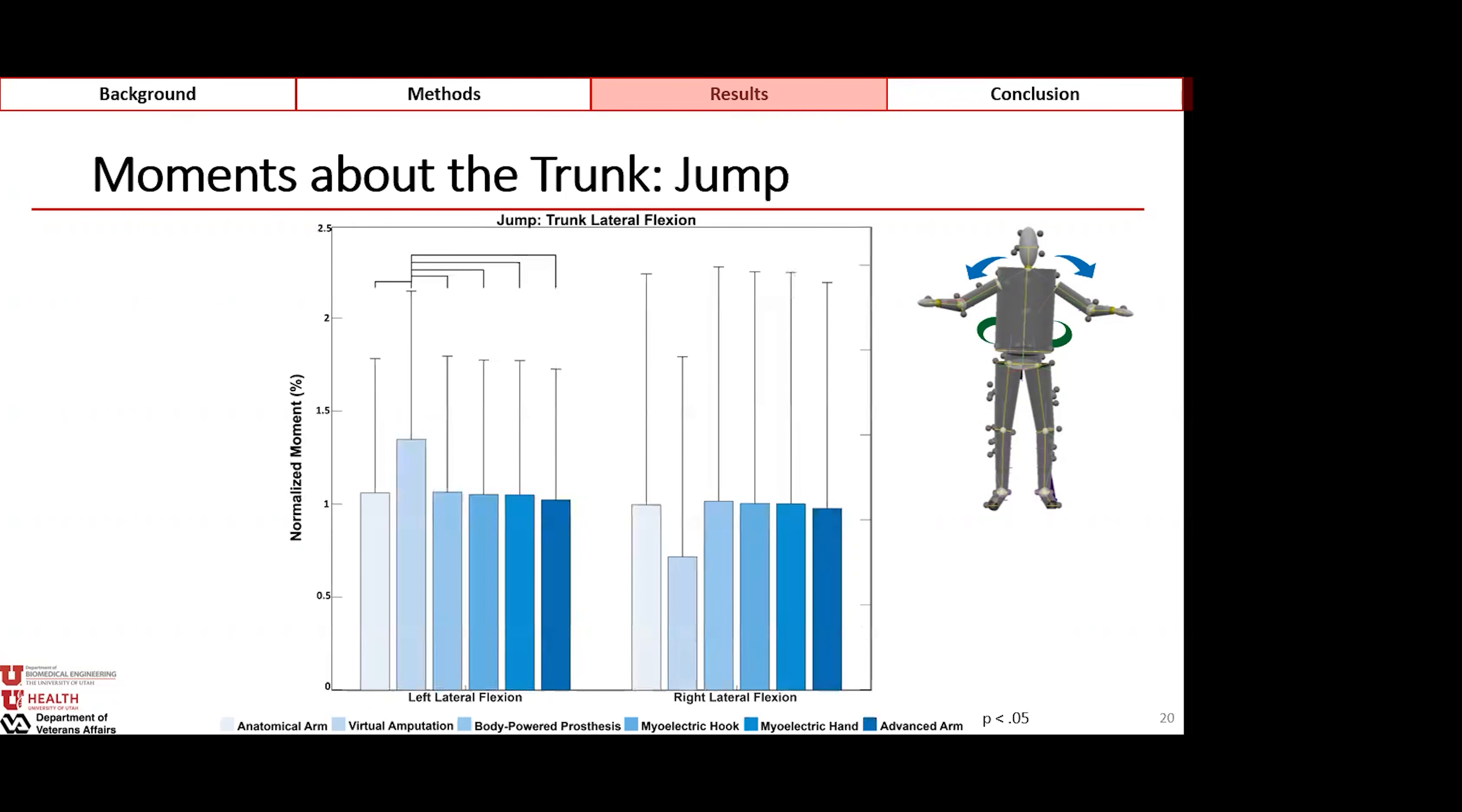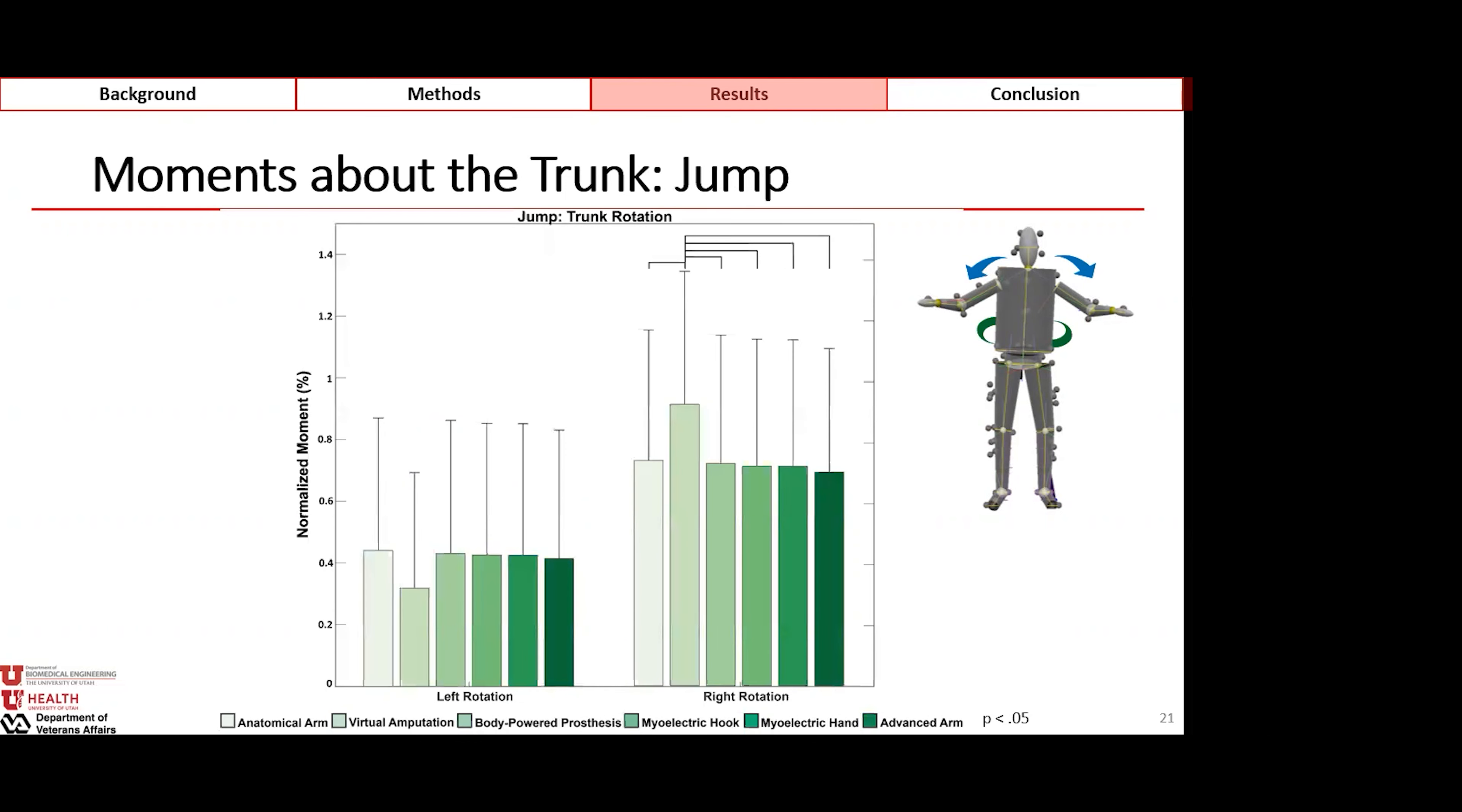Where we get a little funky is in the jump because the jump has a very unique motion profile compared to gait and running. We see in left lateral flexion that there are significant differences between the virtual amputation and all other loading parameters, whereas in rotation we see that difference occurring in right rotation of the body. We believe this is due to the fact that we're changing the loading parameters asymmetrically.